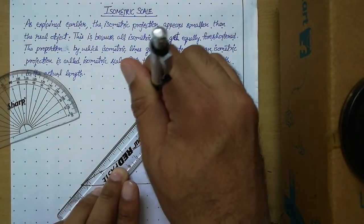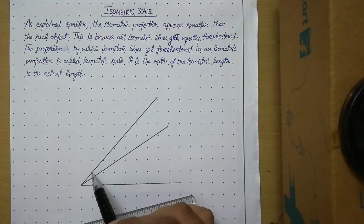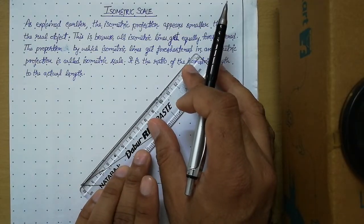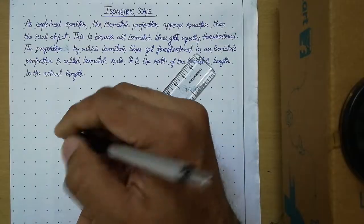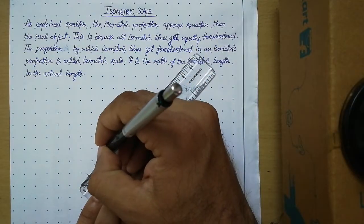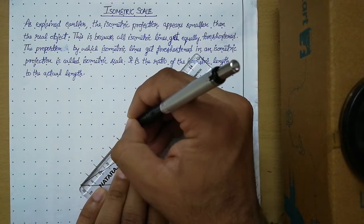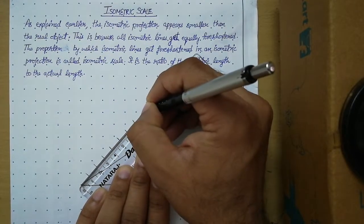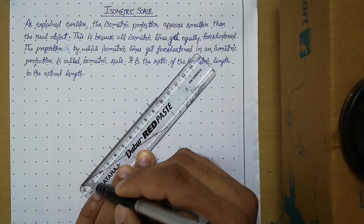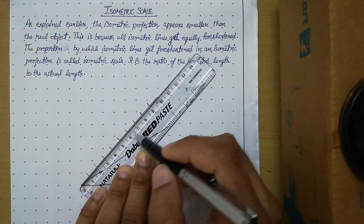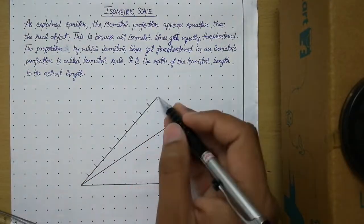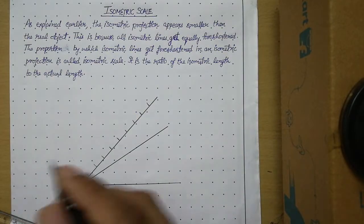On the 45 degree line, we will draw the actual scale. Place your scale at the start of this line and copy the dimensions — mark 1 cm, 2 cm, 3 cm, 4 cm, and so on up to the length you want. Let us draw up to 9 cm. When you mark the actual dimensions, you should also mark the millimeter divisions, but to save time I am just marking the centimeter dimensions. We will call this the true length.